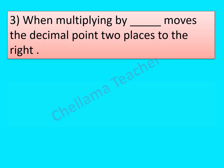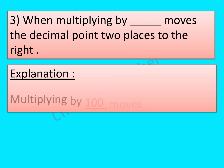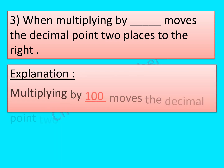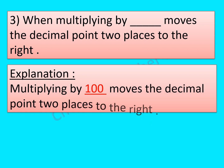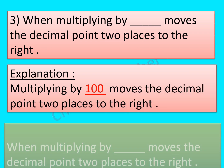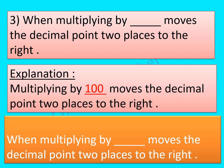Question No. 3: When multiplying by dash, the decimal point moves 2 places to the right. Multiplying by 100 moves the decimal point 2 places to the right. So the final answer is: when multiplying by 100, the decimal point moves 2 places to the right.